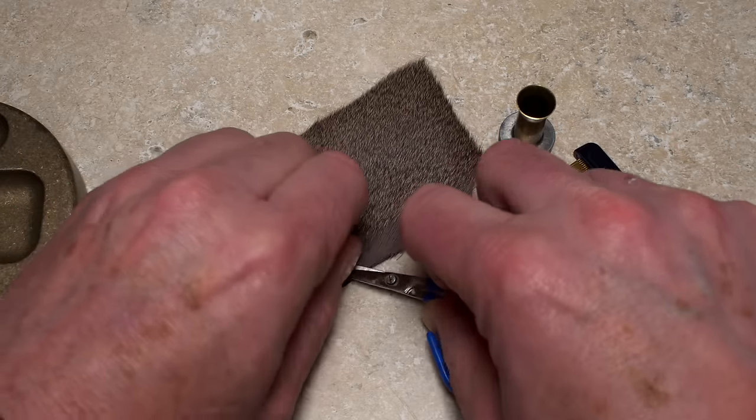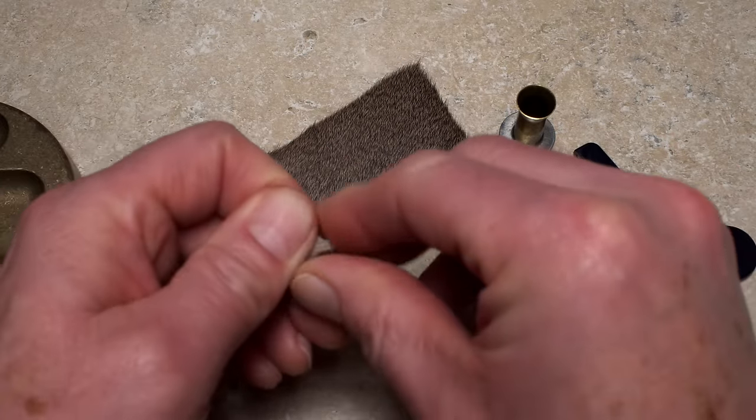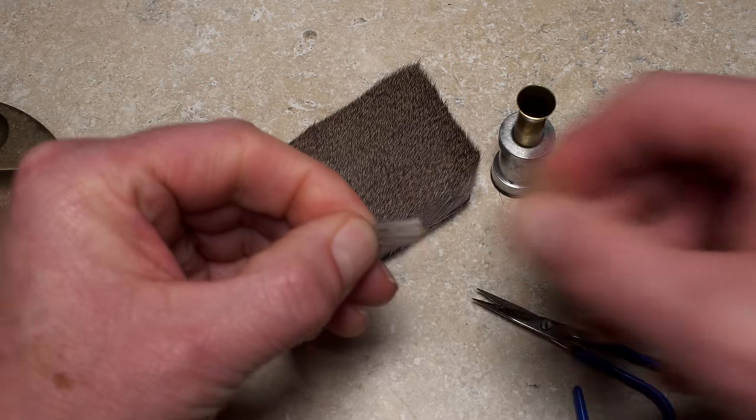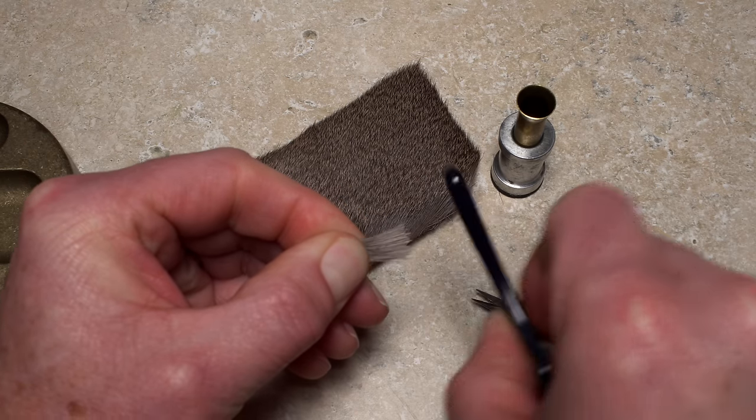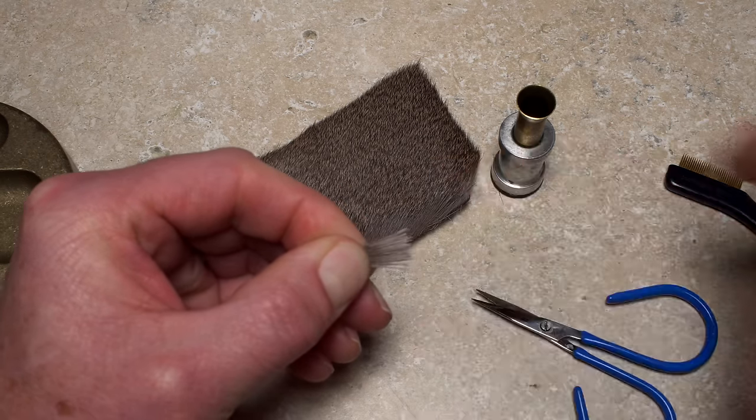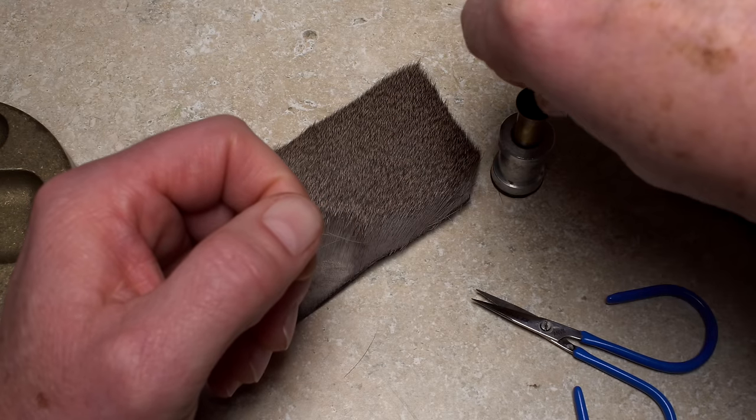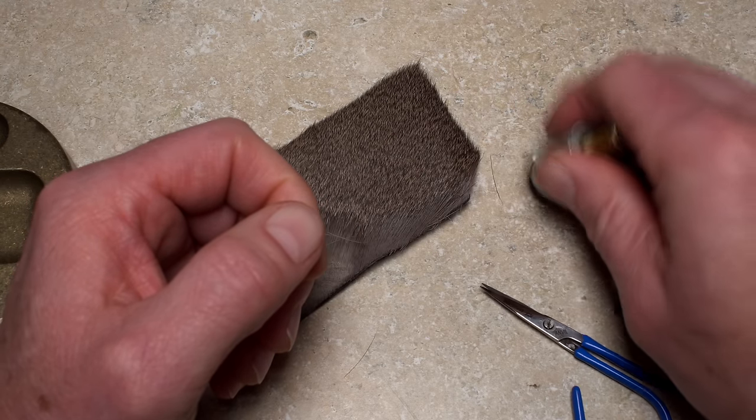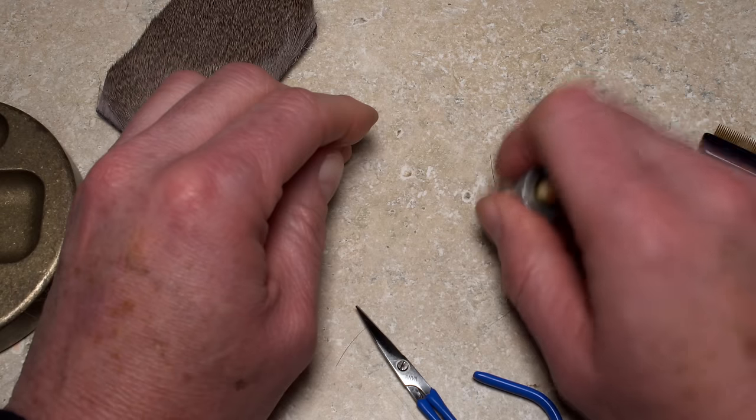For the fly's wing, Matt snips a small clump of dun-colored deer hair free from the hide and uses a fine-tooth comb to strip out short fibers and under fur. He then places the hair, tips first, into a stacker and gives the clump a good stacking.